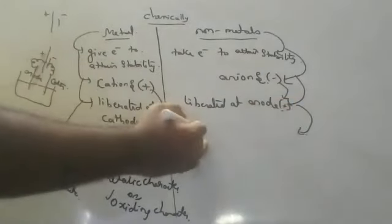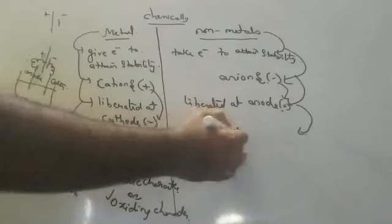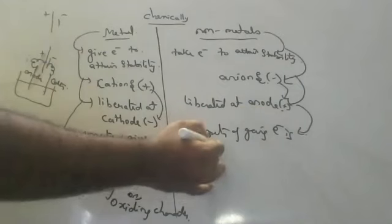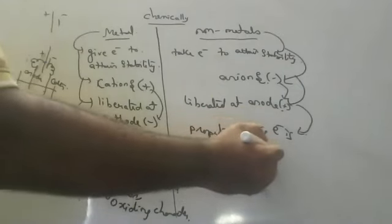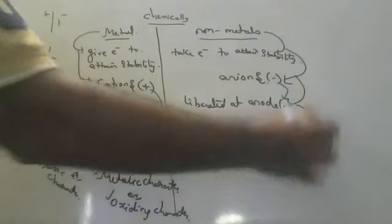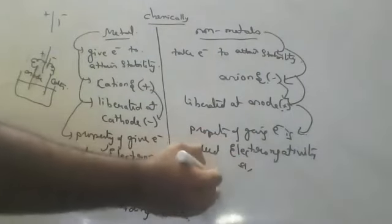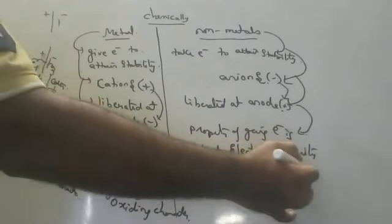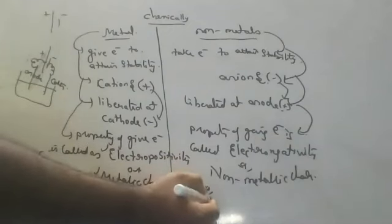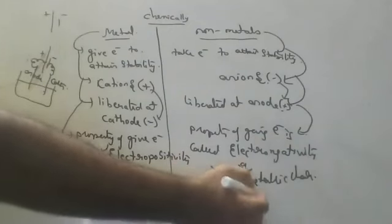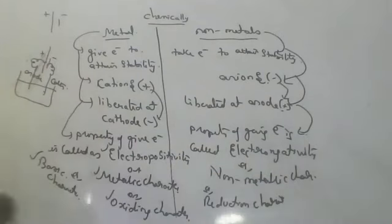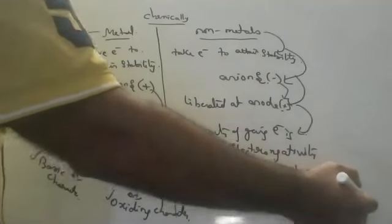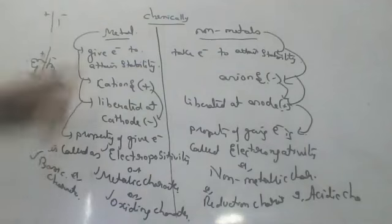For non-metals, the property of gaining electrons is called electronegativity. It is also called non-metallic character. Reduction means taking electrons, so this is also called reducing character. Non-metals always form acids, so this is also called acidic character. Remember: metals form bases, non-metals form acids.